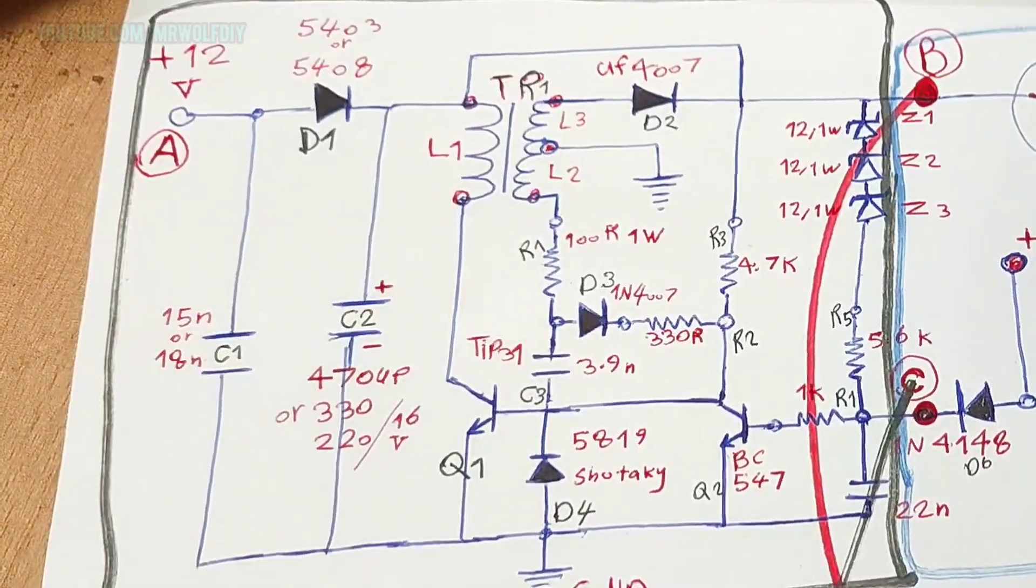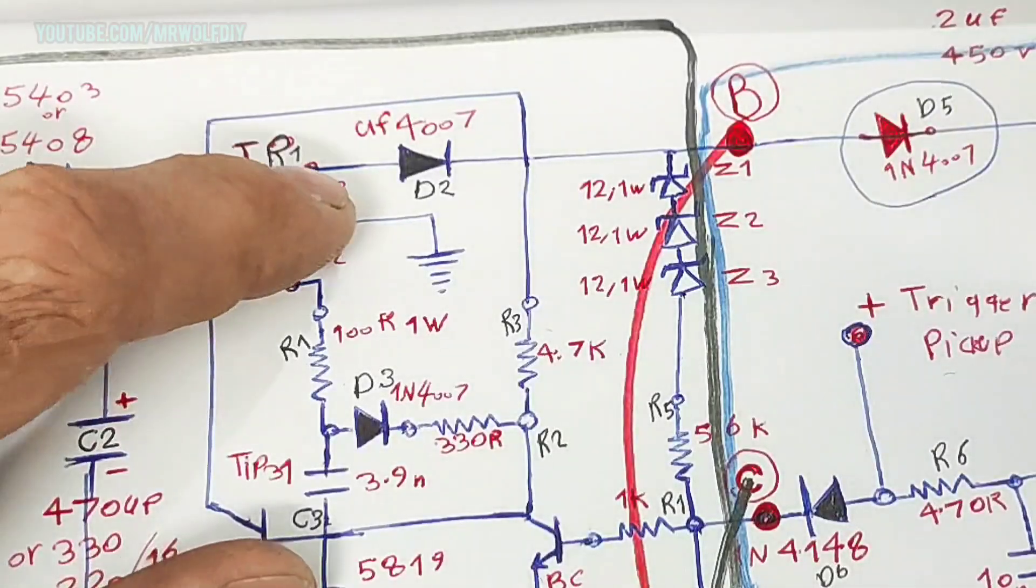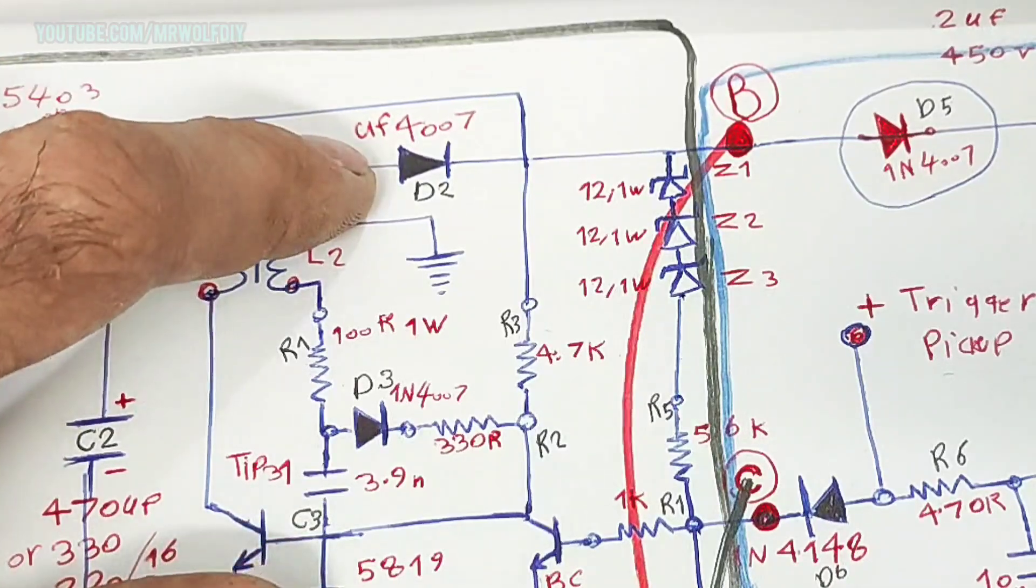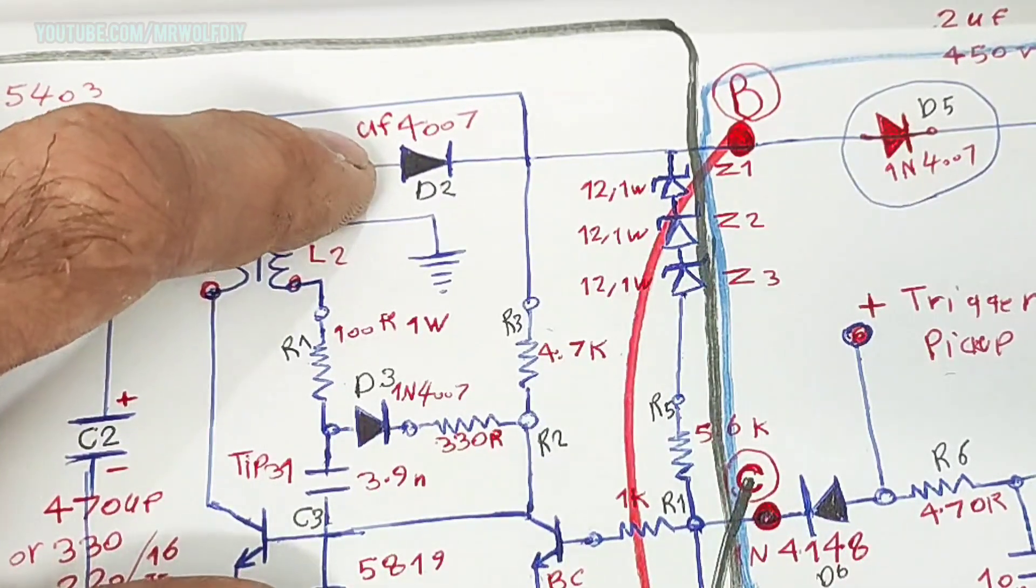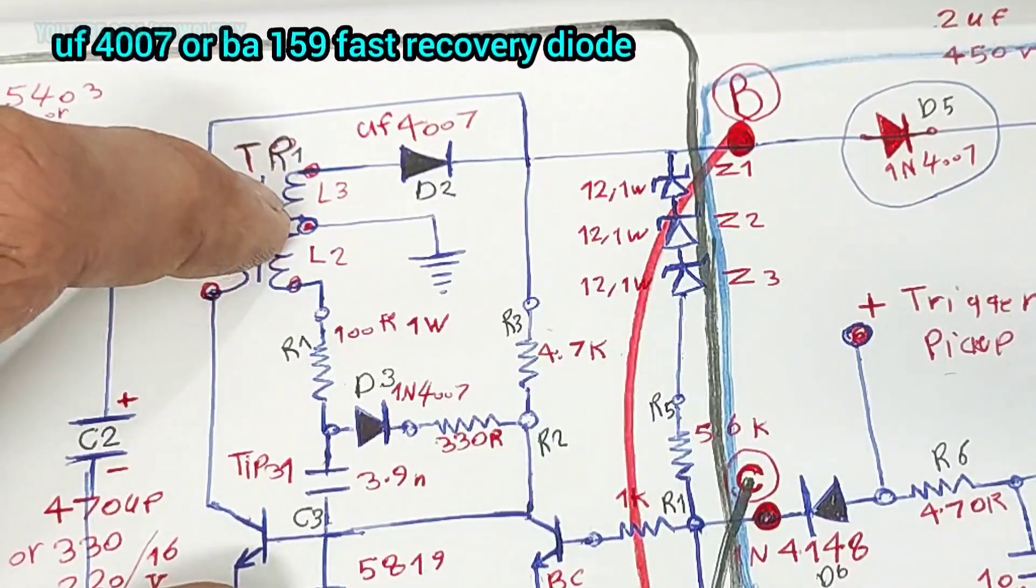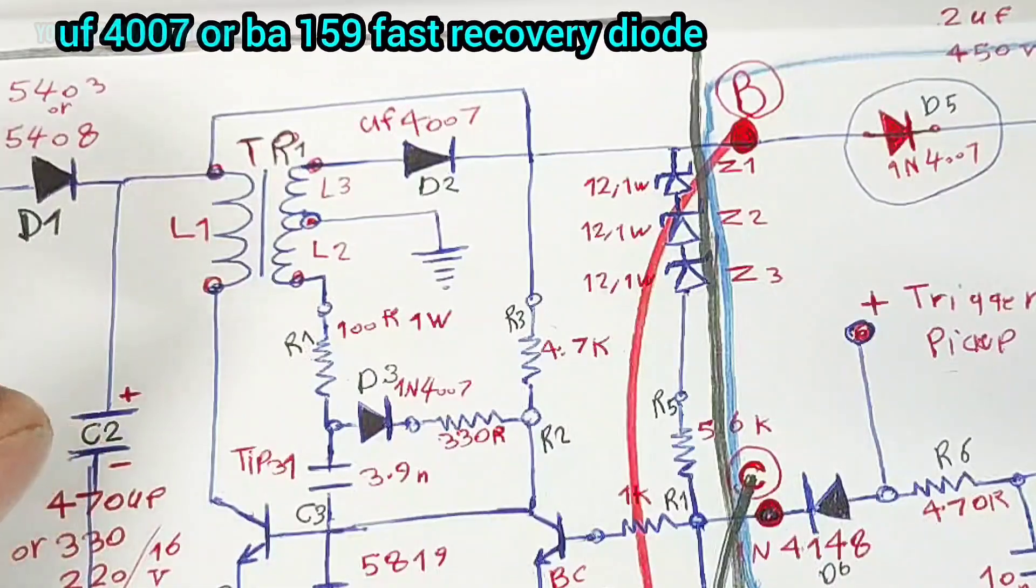And the D2 is a fast diode UF type. I must remember not be confused with the 1N diode. However, you can use BA159 diode.